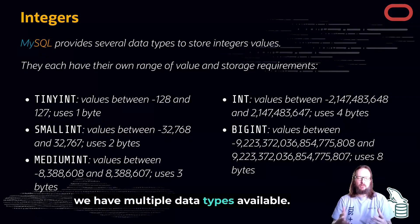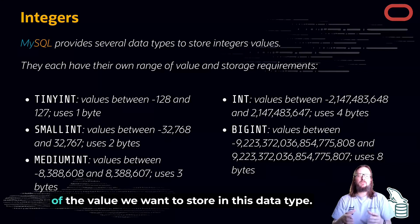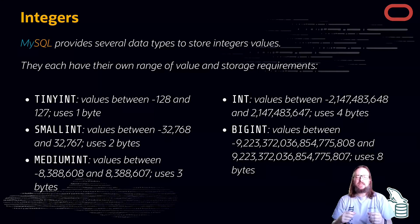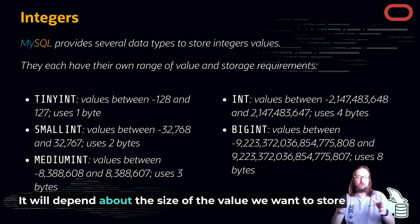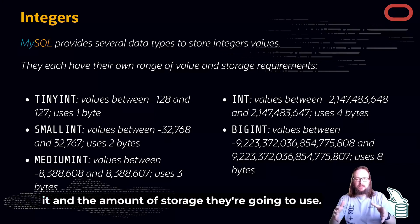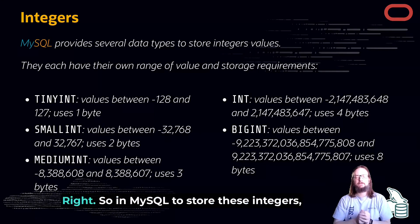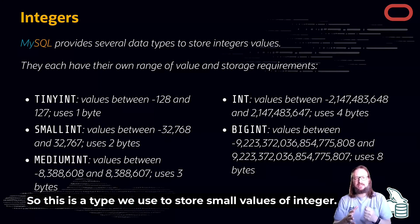To store integers in MySQL we have multiple data types available, and it will depend on the value we want to store. The reason we have different types depends on the size of the value we want to store and the amount of storage they're going to use — on disk, in memory, or for index pages. To store integers, we have TINYINT.